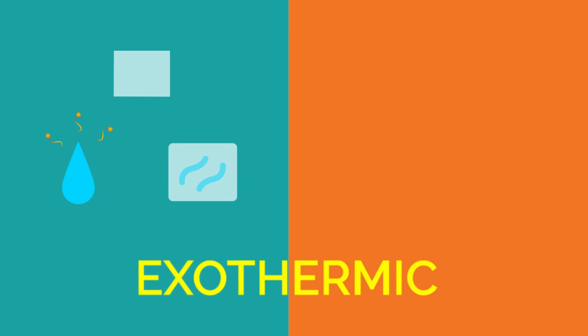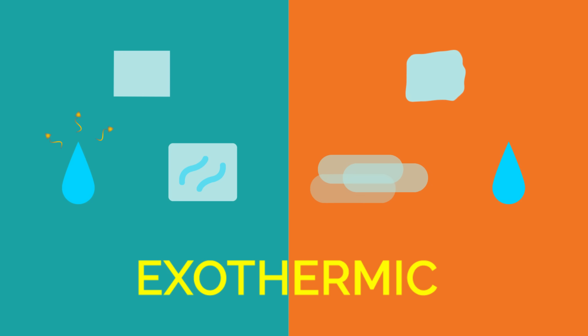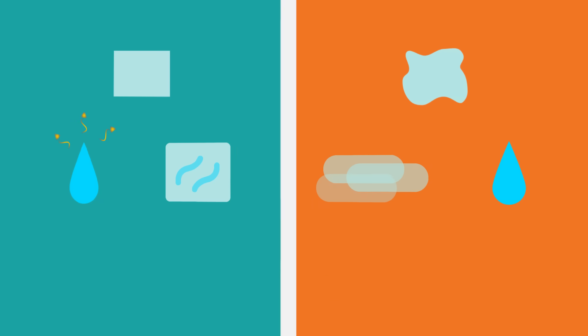Physical processes can also be endothermic or exothermic. When something freezes it goes from liquid to solid — bonds need to be made for this to happen, and to make bonds you need to do some work, so energy is given out and freezing is exothermic. Similarly when condensation happens, a gas goes to liquid, bonds need to be made and energy is given out. So freezing and condensation are both exothermic.